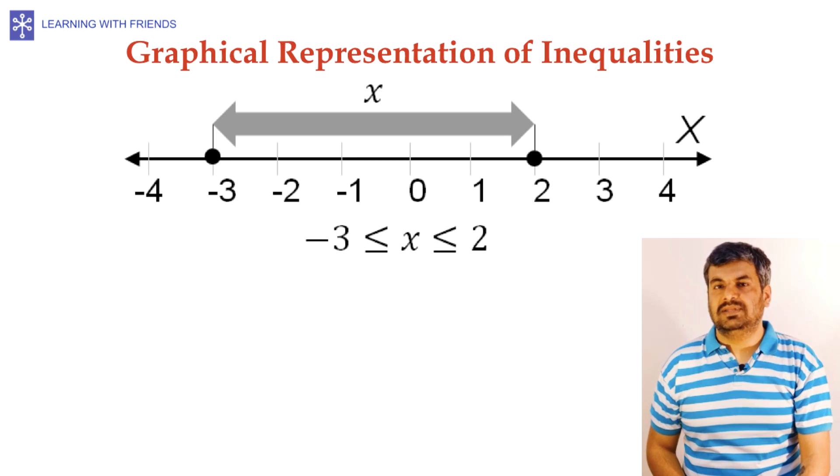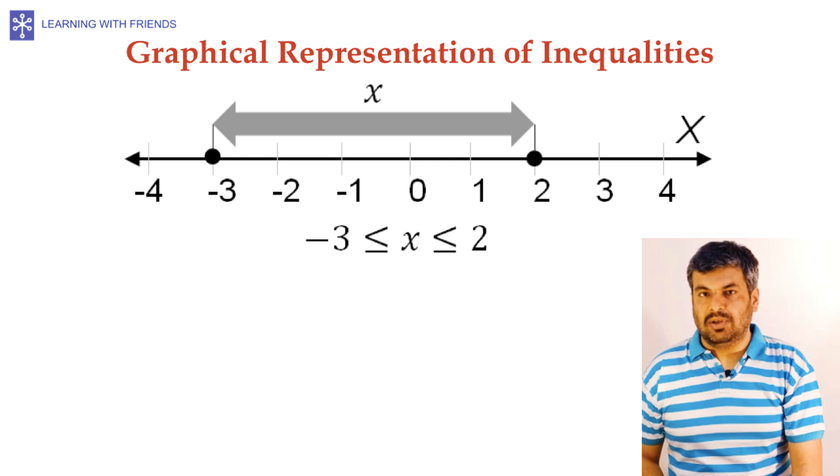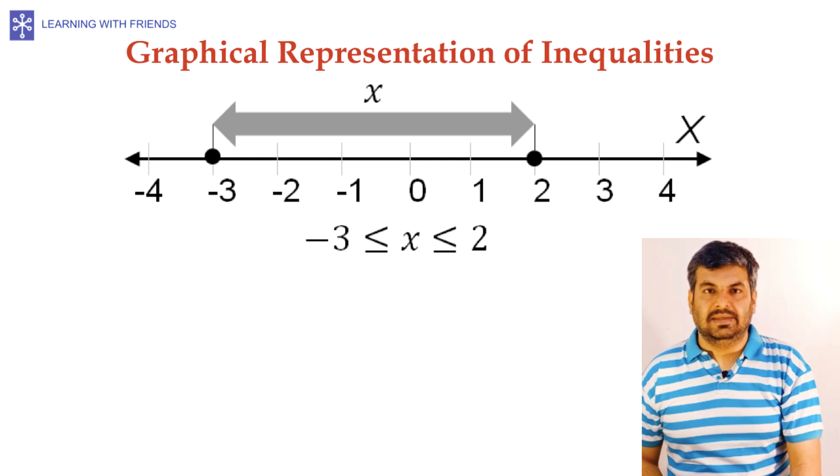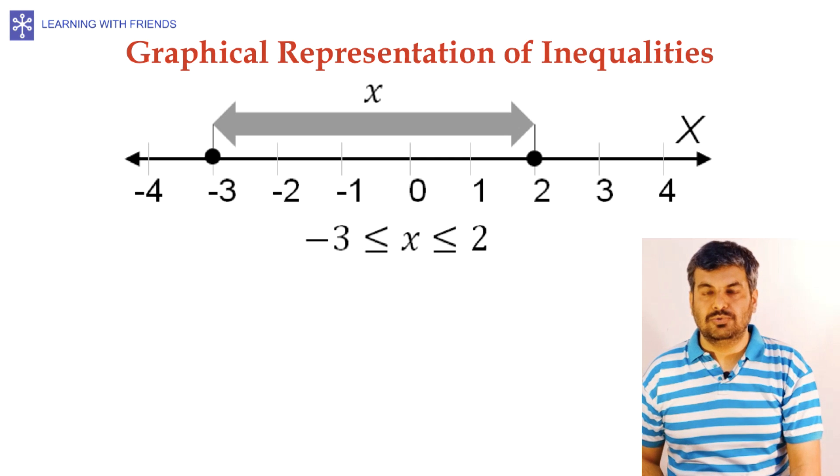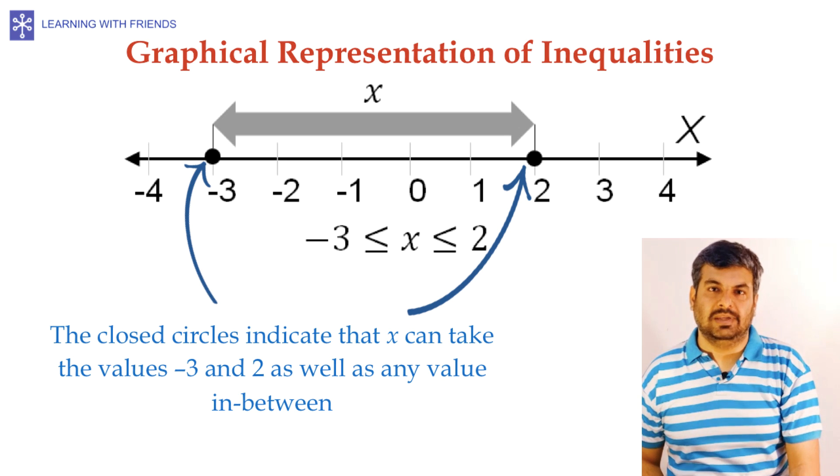Consider another inequality, minus 3 is less than or equal to x is less than or equal to 2. This inequality, when we represent on the number line, starts from minus 3 on the left-hand side and goes up to 2 on the right-hand side. Here, minus 3 and 2 have closed circles because these are part of the solution to the inequality.